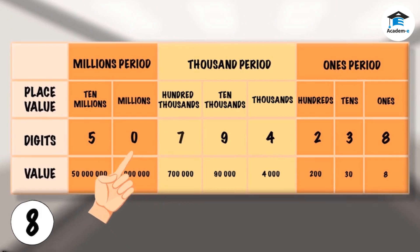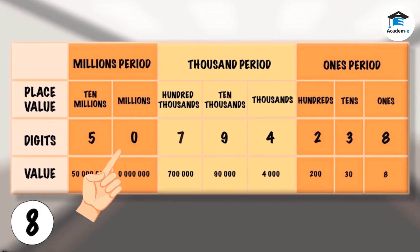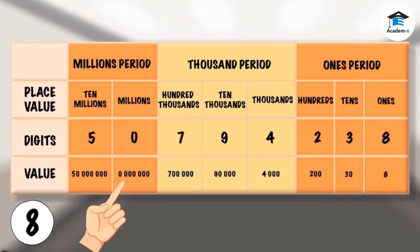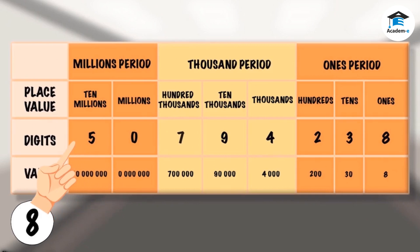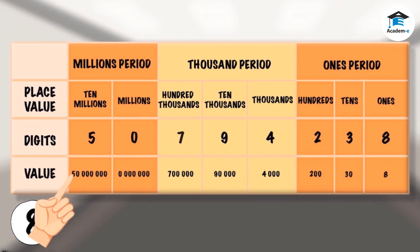The place value of 0 is millions, and the value of 0 is 0. No matter what the place of 0 is, the value is always 0. The place value of 5 is ten millions, and the value of 5 is 50 millions.